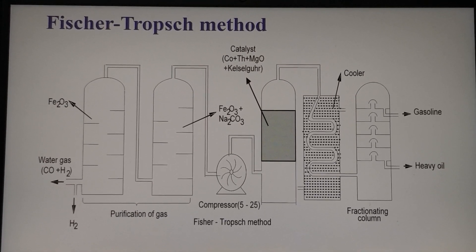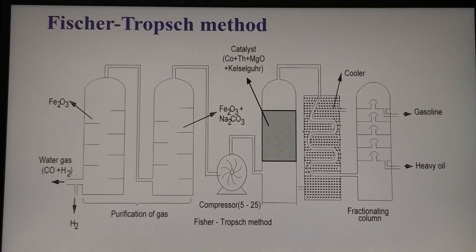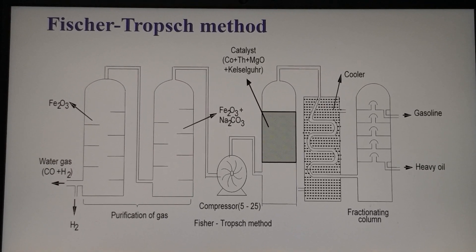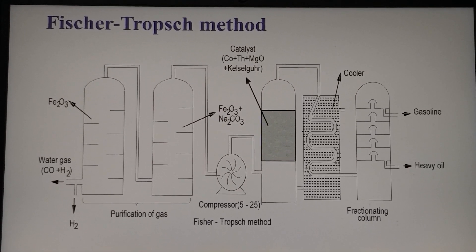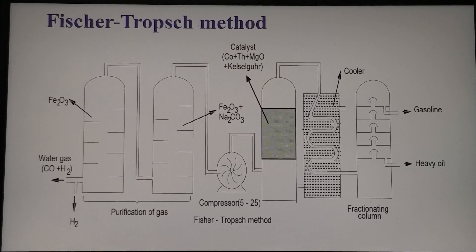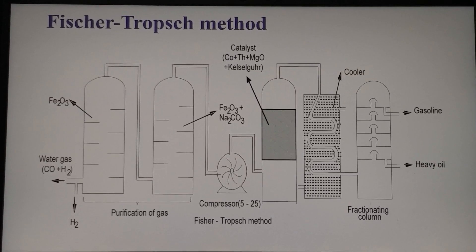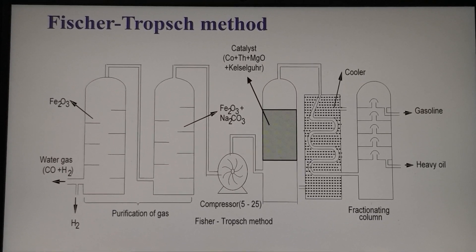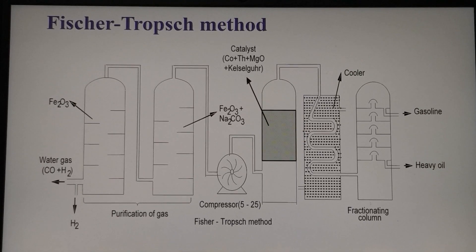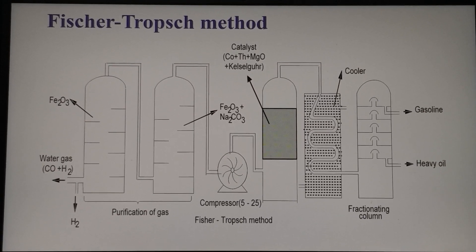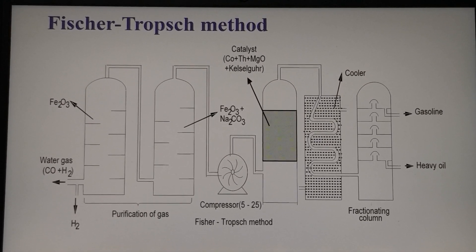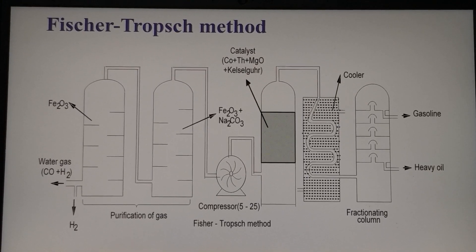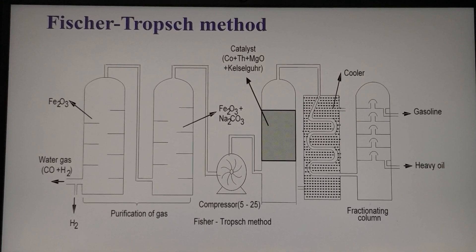From the top, through a pipe, it is led into another purification tower containing iron oxide and sodium carbonate, kept in heaps on partitions in the tower, to remove the organic sulfur. Once the sulfur impurities are removed, the water gas is compressed to about 5 to 25 atmospheres and then led into the catalytic chamber containing the catalyst, maintained at around 250 to 300 degrees centigrade, where the polymerization reaction takes place.